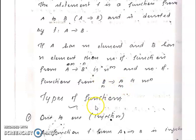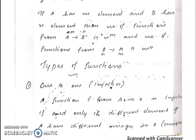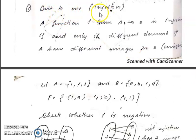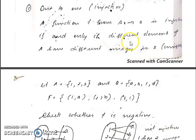Now we learn types of functions. The first type is one-to-one function, also called an injective function. A function F from A to B is injective if and only if different elements of A have different images in B — that means each element of A has a unique image in B.